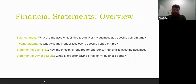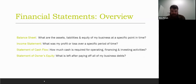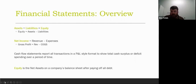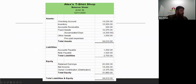A balance sheet is a snapshot in time of your assets, liabilities, and equity. For example, as of October 25th, 2022: how much cash do I have in my checking account, what is my credit card balance, what is the net book value of my business assets — maybe a machine or a van? Your assets equal your liabilities plus your equity. If you take all your assets and subtract all your debt, what's left is your equity — your net worth of the business. We'll mostly focus on the P&L today, but we'll send out this PowerPoint so you can review definitions and terms on your own.